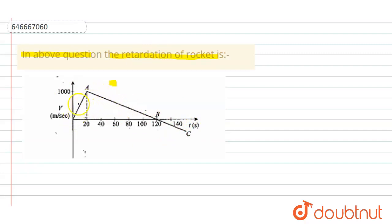Now since here velocity is increasing, so this is accelerated motion and here velocity is decreasing, so this is retarded motion, so we have to find the slope of this line.